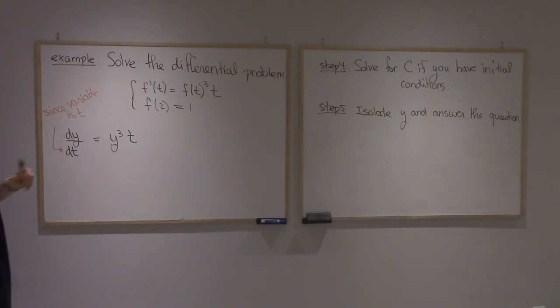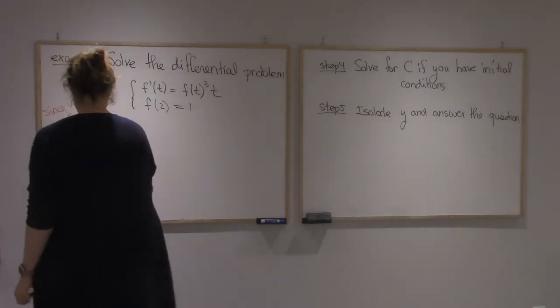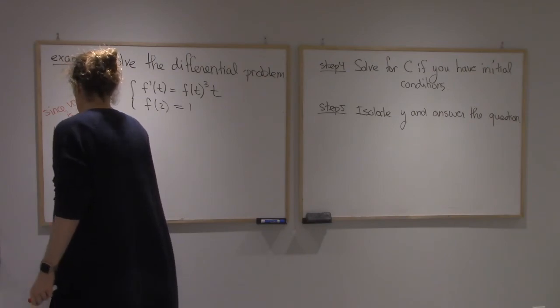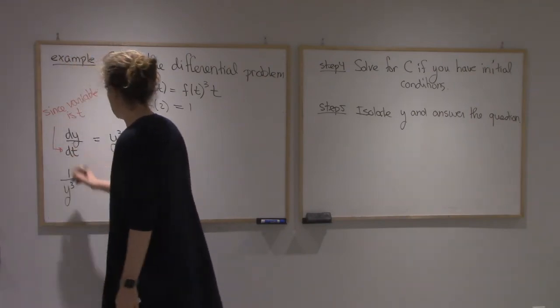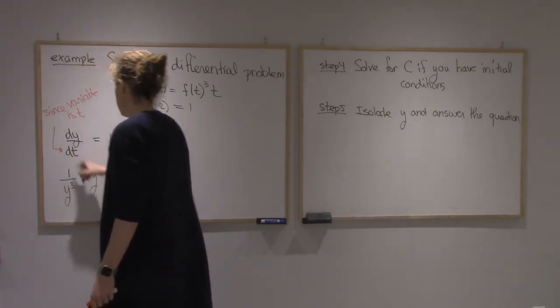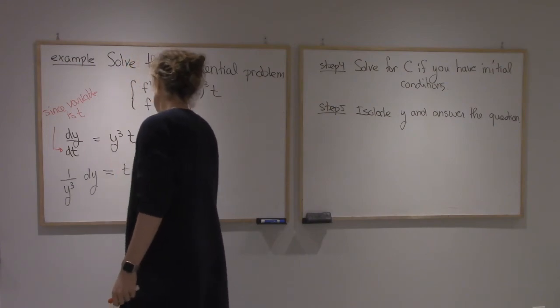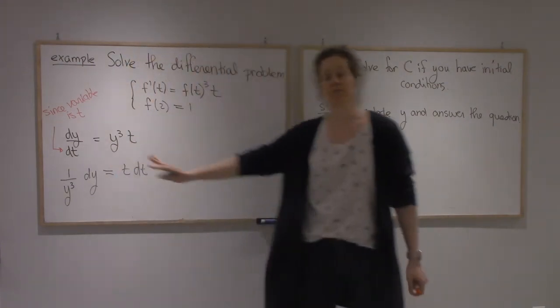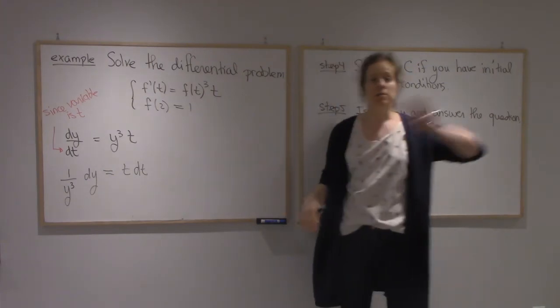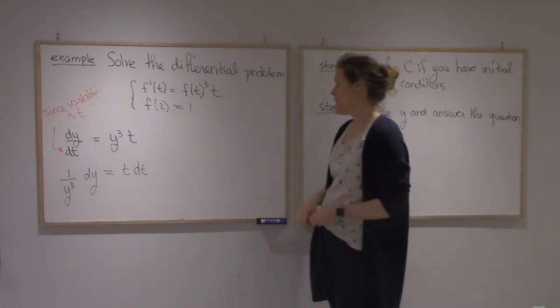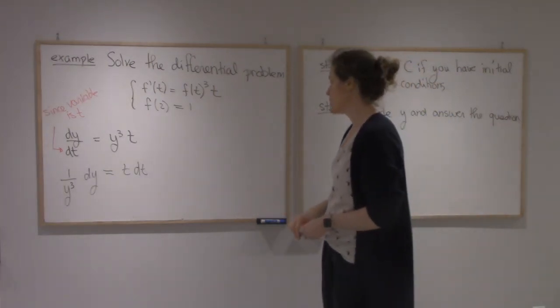Alright, now I need to split my variables. I'm going to take y cubed, send it to that side. Take dt, send it to this side. Now on the left of the equation, I have only y's. On the right, I have only t's. So I'm ready to integrate.